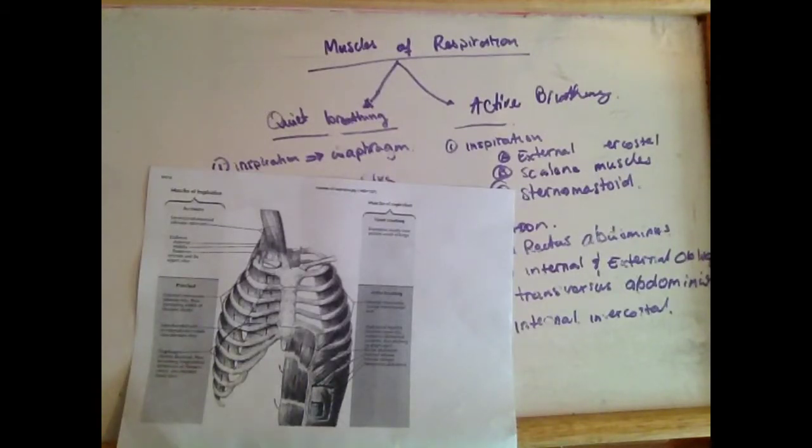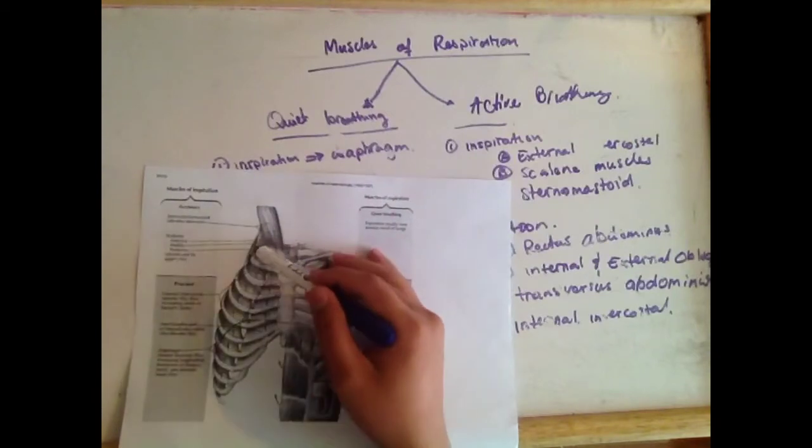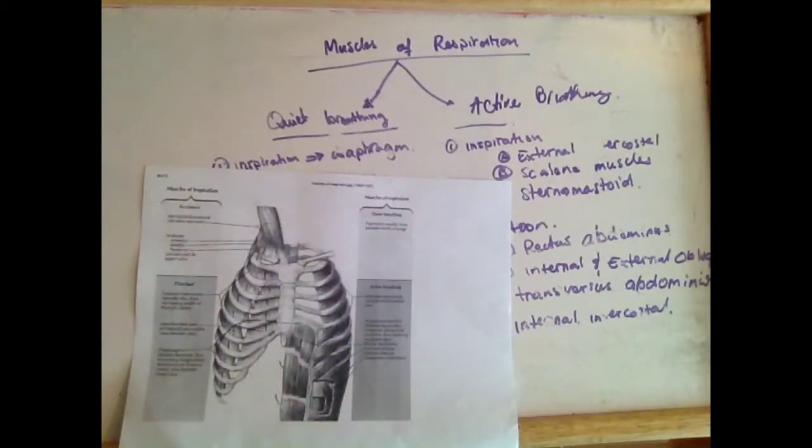And the scalene muscles, scalene muscles are the ones that attach to your first and second ribs, and the sternocleidomastoid. These muscles, when they contract, elevate the ribcage and the sternum will get elevated and that increases the intrathoracic cavity, leads to inspirations.